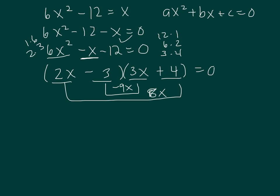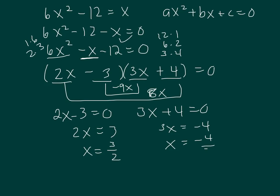Factoring was covered in the review section. And now you take each factor and you set it equal to 0. And then you solve for x. Now you have linear equations. So that's 2x equals 3. x equals 3 halves. And then 3x equals negative 4. x equals negative 4 thirds.